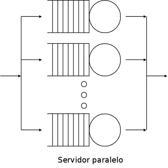Queuing theory is the mathematical study of waiting lines, or queues. A queuing model is constructed so that queue lengths and waiting time can be predicted. Queuing theory is generally considered a branch of operations research because the results are often used when making business decisions about the resources needed to provide a service.